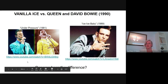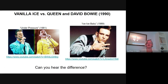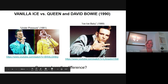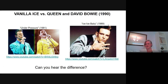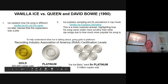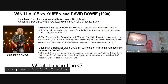Next week we're going to talk about a famous lawsuit that happened in 1990 between Queen, David Bowie, and Vanilla Ice. There was a song called Under Pressure that came out in 1981 — if I play it, you'll recognize it — and a song called Ice Ice Baby that came out in 1989. We're going to play the bass part and see if you can hear a difference. Vanilla Ice versus Queen and David Bowie — a lot of people had very strong opinions when we started talking about it.